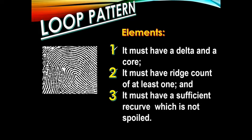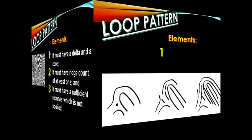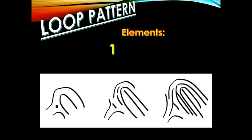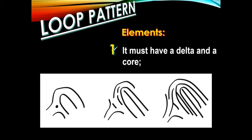Later, we are going to discuss the elements one by one. The first element of the loop pattern is that it must have a delta and a core. If you have watched my previous video regarding the analysis of different fingerprint characteristics and formations, I have discussed there the different rules in locating the delta and the core.